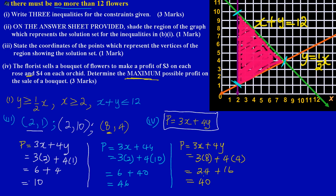Therefore, the maximum profit is forty-six dollars. If they had asked for the minimum profit, you would state ten dollars since that's the least. But since we're interested in the maximum profit, the answer is forty-six dollars. See you in the next video!